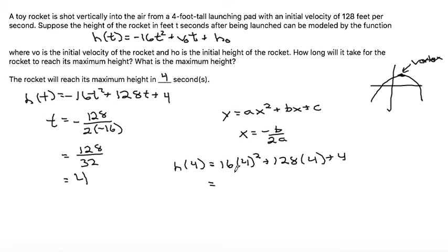So plugging that into the calculator, we get 4² is 16, so that would be 16 times 16, which is 256, plus 128 times 4, which is 512, plus the extra 4 there. So adding that all up, I get 772.